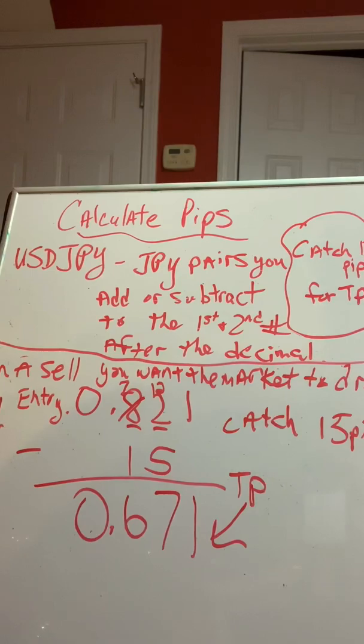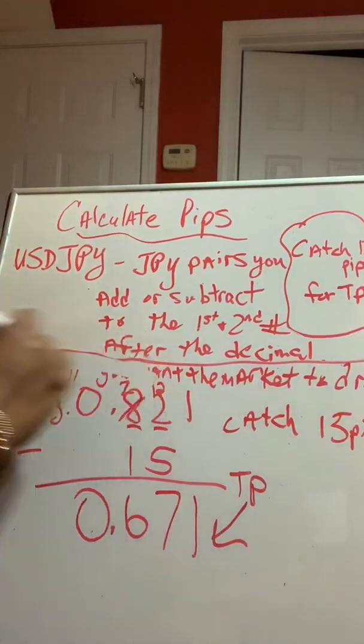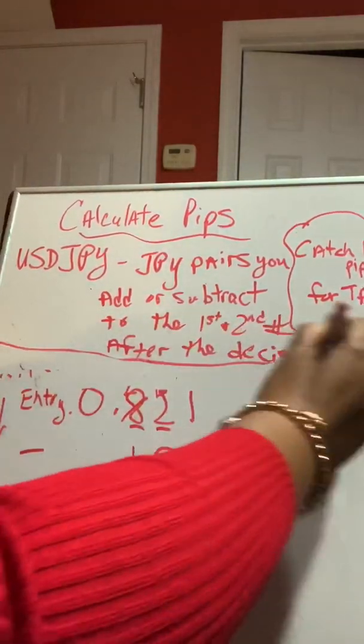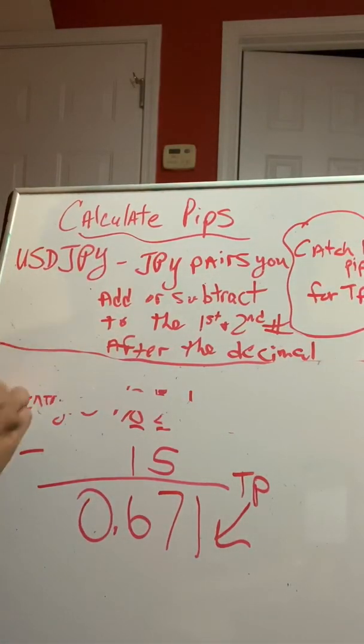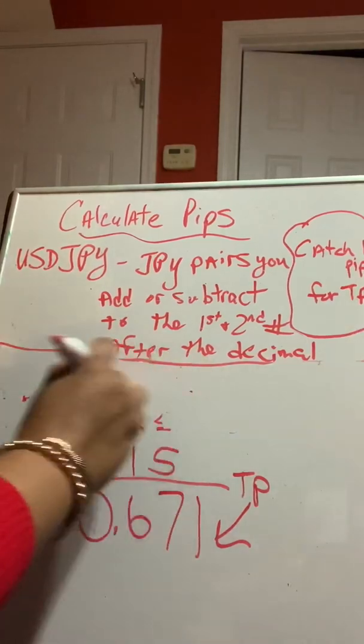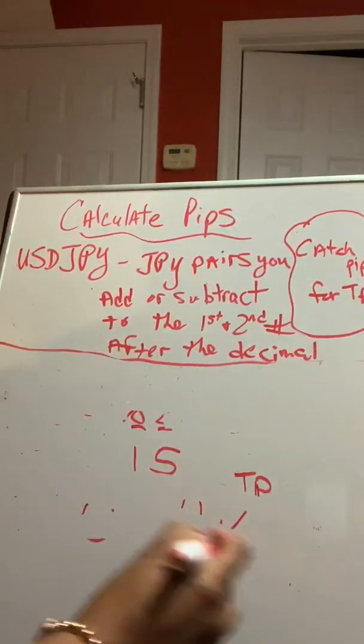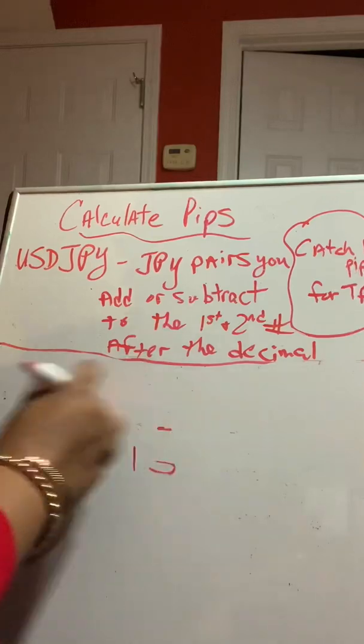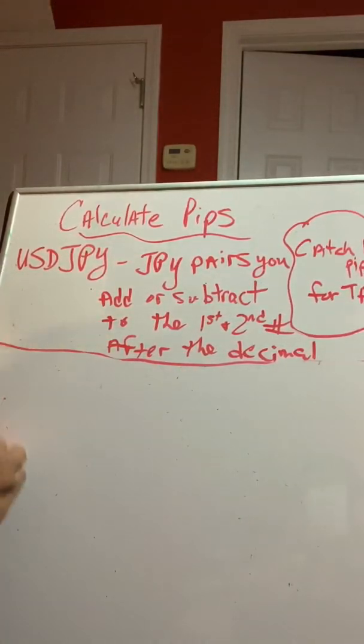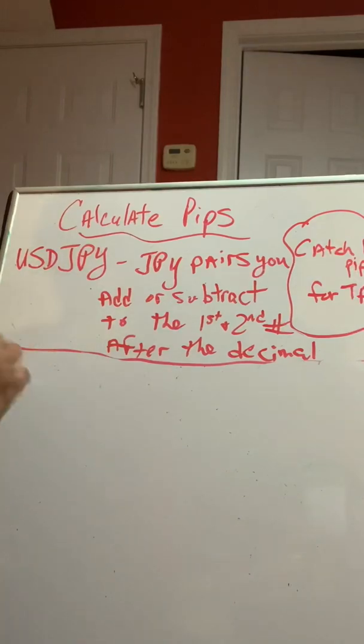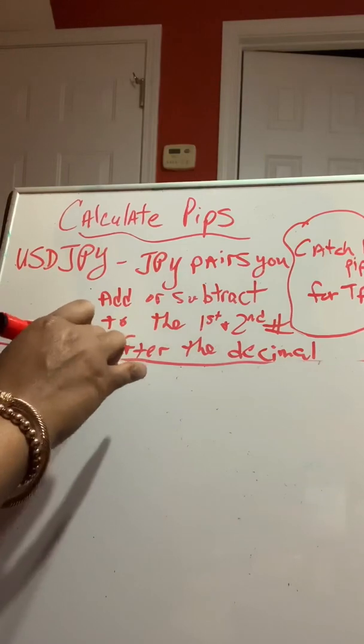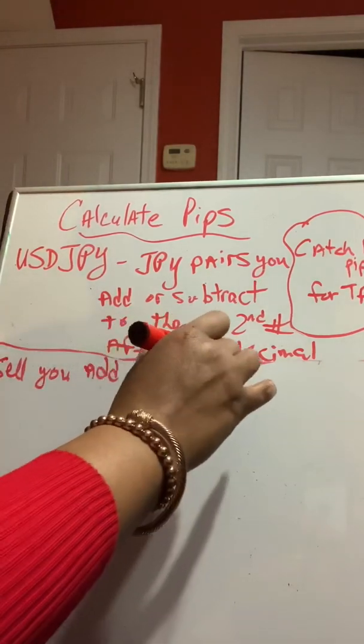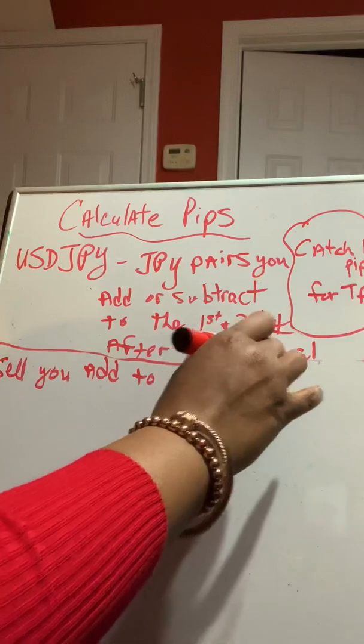That's how you calculate pips. And it goes the same way for when you're setting your stop loss. Okay? So, if you're setting your stop loss, that means, hey, if I'm in a sale and the market goes up, I want you to stop me out so many pips. So, if you're in a sale to get your TP, you're going to subtract because you want the market to go down to a lower number. If you're in a sale to set your stop loss, you do the opposite to get your stop loss. In a sale, you add to get your stop loss to get stop loss. Okay?